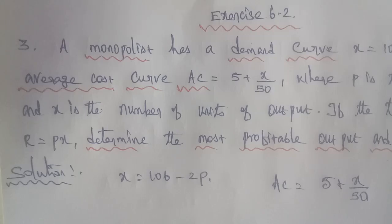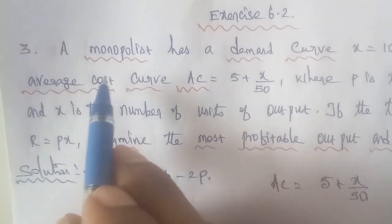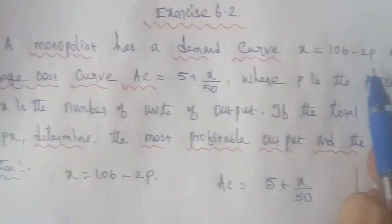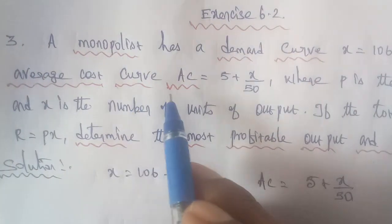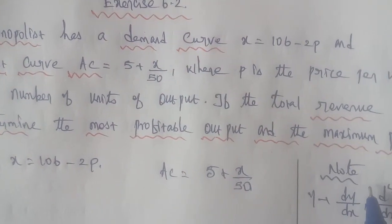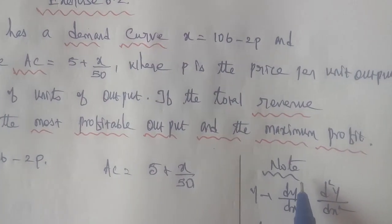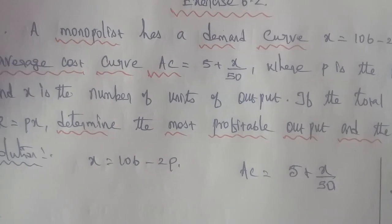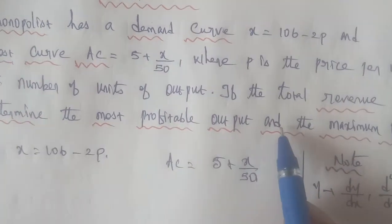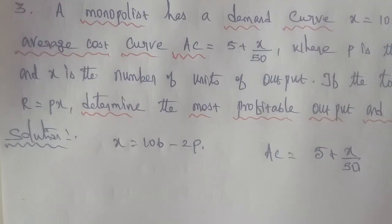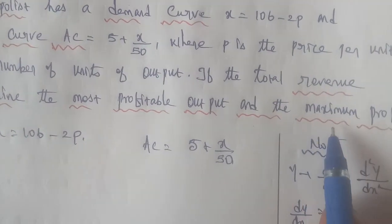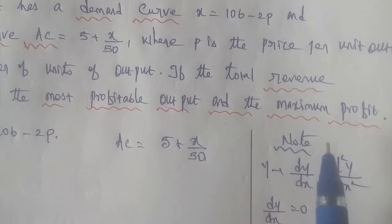Exercise 6.2, Q3. A monopolist has a demand curve x equal to 106 minus 2p, and the average cost curve AC is equal to 5 plus x by 50, where p is the price per unit output and x is the number of units of output. If the total revenue R is equal to px, determine the most profitable output and the maximum profit.